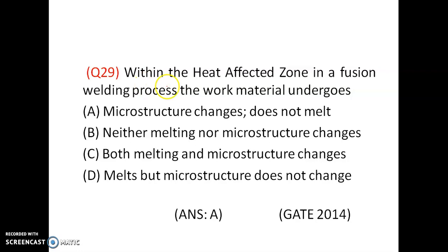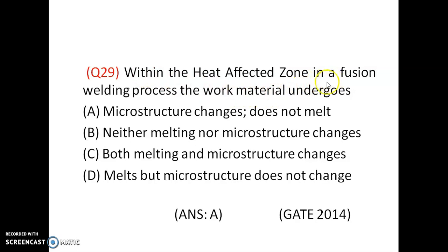Within the heat affected zone in a fusion welding process, the work material undergoes — options: microstructural changes but does not melt; neither melting nor microstructural changes; both melting and microstructural changes; melts but microstructure does not change. The microstructure within the heat affected zone undergoes microstructural changes but does not melt. Option A is correct.